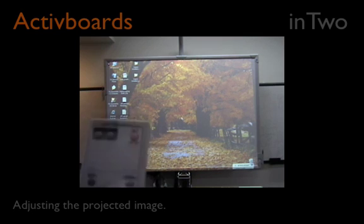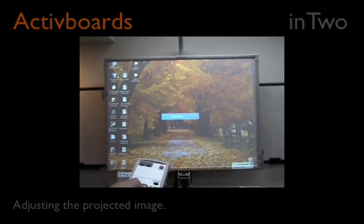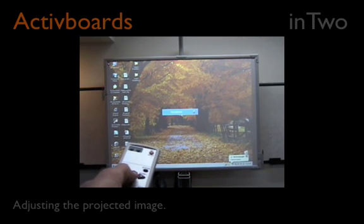Your image may still be displaying below the bottom of the board. Press the keystone button on your remote and press the down arrow until the entire image is on the surface of the board.